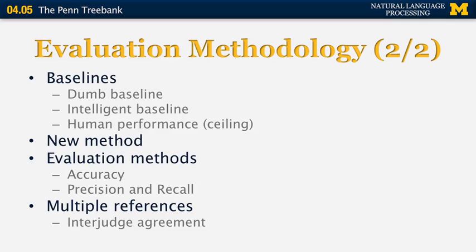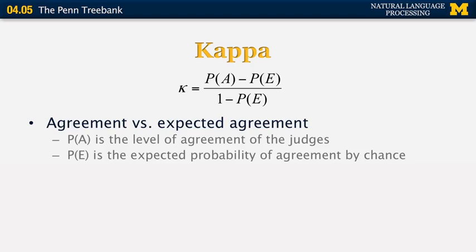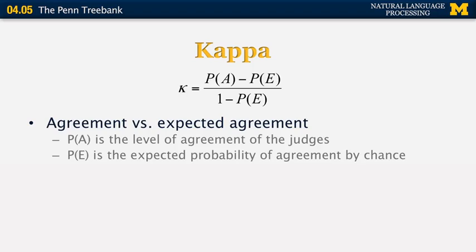Inter-judge agreement tells you what percentage of the time human judges pick the same label. You can also use a metric called kappa. Kappa is a normalized performance measure where P(A) is the agreement between your system and the human judges, and P(E) is the expected agreement if the judges were labeling randomly. If kappa is greater than 0.7, inter-judge agreement is considered high. If it's much lower — for example 0.4 or 0.3 — the task is not well defined, and no matter what results your system achieves, they will not be meaningful.